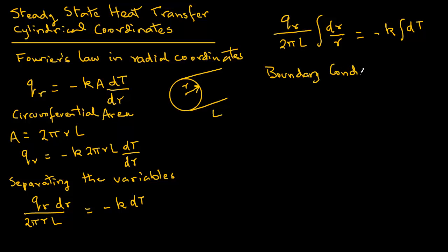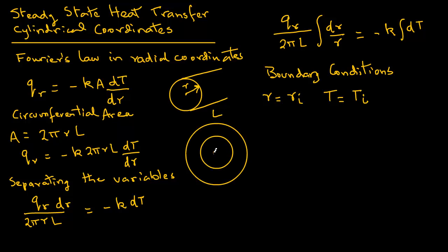The boundary conditions are: at r equals r_i, temperature equals T_i. Note that this pipe has a certain thickness, so the inside radius is r_i and the outside radius is r_o. At the inside radius the temperature is T_i, and at the outside radius the temperature is T_o. So the second boundary condition is r equals r_o, T equals T_o.